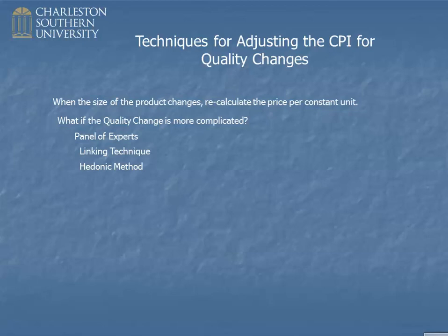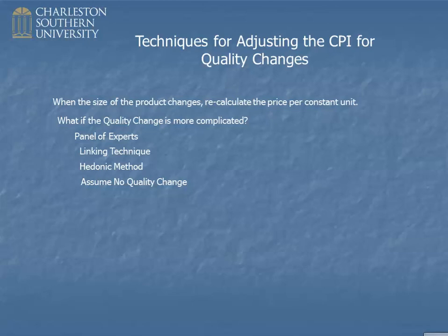That's enough on the hedonic technique for a sophomore-level class. My all-time favorite technique is when it's really hard to figure out what's going on — they just assume there's no quality change. It sounds almost humorous, but it's actually a technique often used for services like medical or legal services, where quality changes are extremely difficult to measure. You'll see a couple more lessons covering further detail, especially on the linking technique.